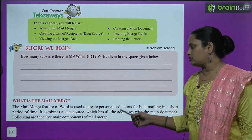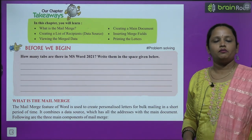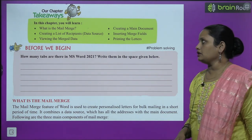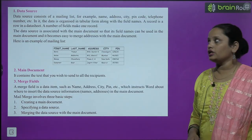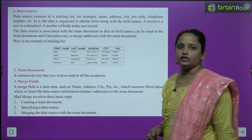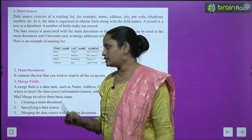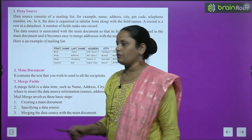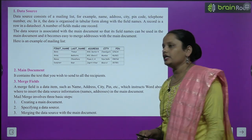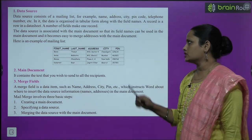Following are the three main components of mail merge. The first is data source, the second is main document, and the third is merge fields.